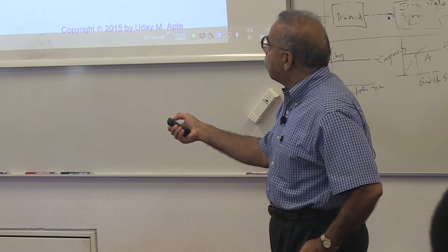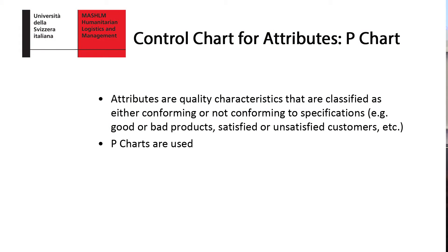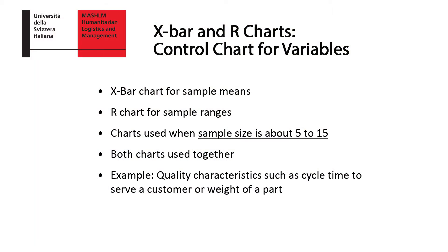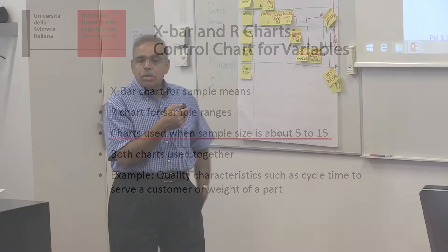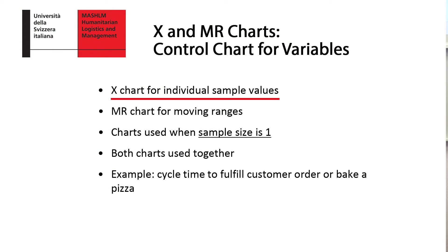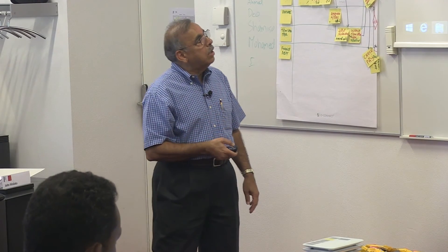Let me describe the 3 most commonly used kinds of process control charts. The p-chart is about attributes — typically good or bad, defect or no defect. The X-bar R chart uses two charts simultaneously: the X-bar chart for means and the R chart for sample ranges, generally used when sample size is about 5 to 15. The last is the XMR chart, used for individual sample values. All these charts use ready-made formulas developed by statisticians to compute the upper and lower control limits.